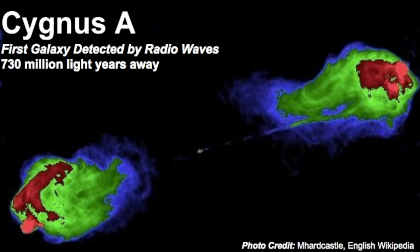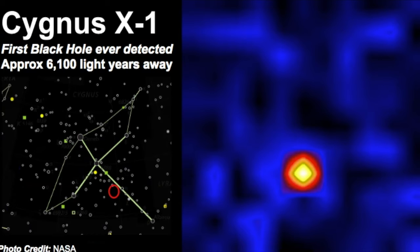Of course you can't talk about Cygnus without mentioning the black hole that's within the boundaries of this constellation. Cygnus X1 was the first black hole that was ever detected. It's estimated to be 6,100 light years away and this is an x-ray version of what this area looks like. We have since gathered two different pictures of what black holes look like but the way we detect them is through x-rays.